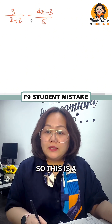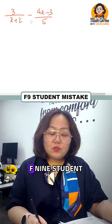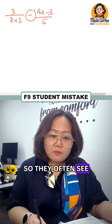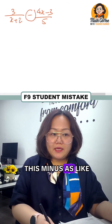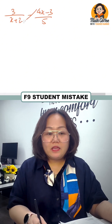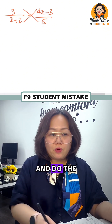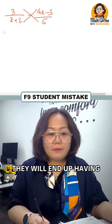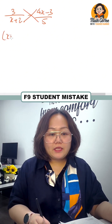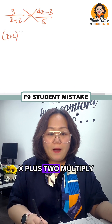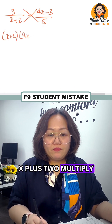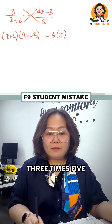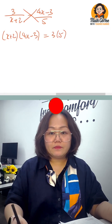This is a common mistake for F9 students. They often see this minus as an equal sign and go ahead with cross multiplication, ending up with (x + 2) multiplied by (4x − 3) equals 3 times 5.